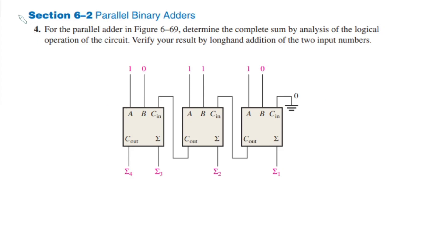Welcome back. This is section 6.2 in which we have to see the parallel binary adders. Previously we have seen the foundational concepts related to adders. Here we are more concerned with the applications of binary adders. This is question 4 and the statement is: for the parallel adder in figure 6.69, determine the complete sum by analysis of the logical operation of this circuit. We have to analyze the operation of this circuit and verify the result by long-hand addition of the two input numbers.